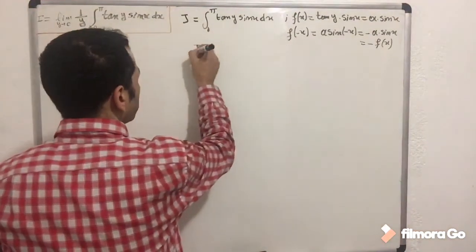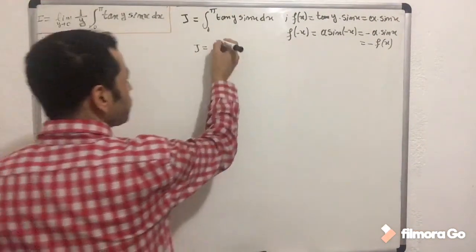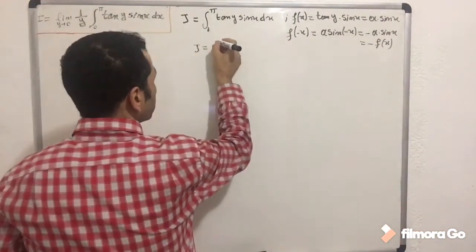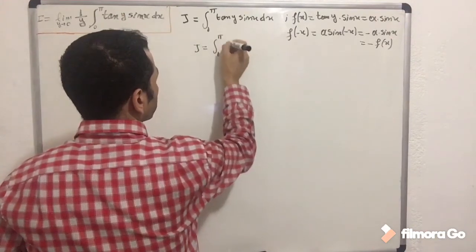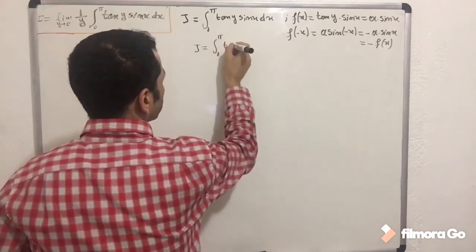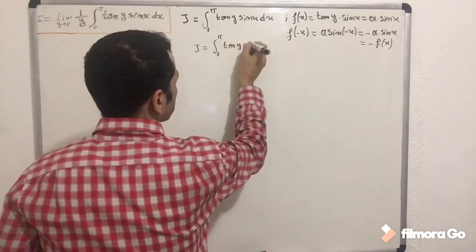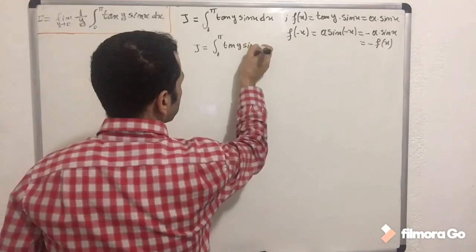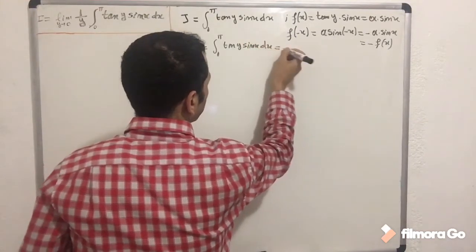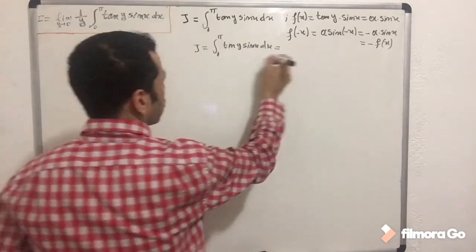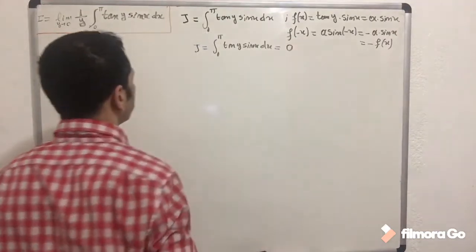So the integral from 0 to π of tangent(y)·sin(x) dx equals zero, because it is an odd function. The integral evaluates to zero — that's it.